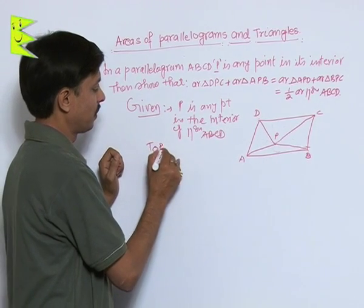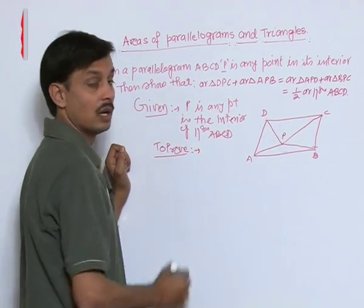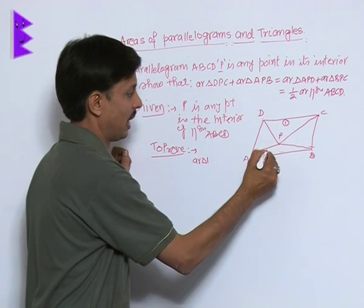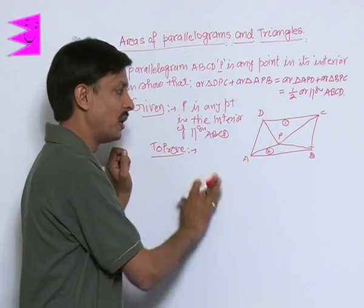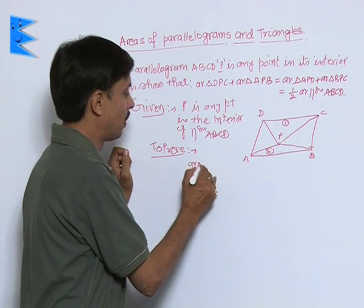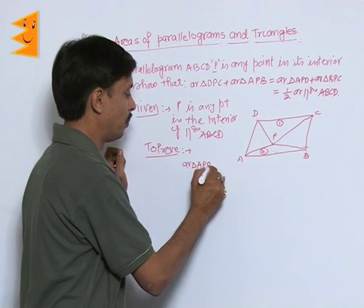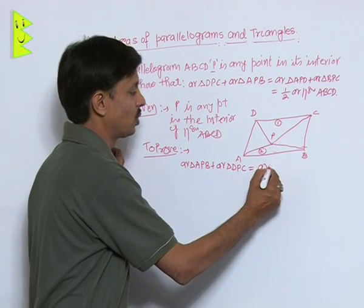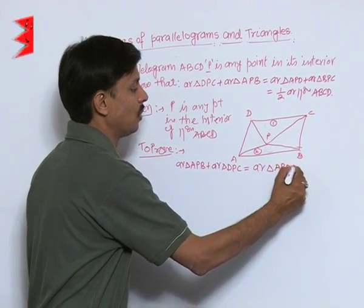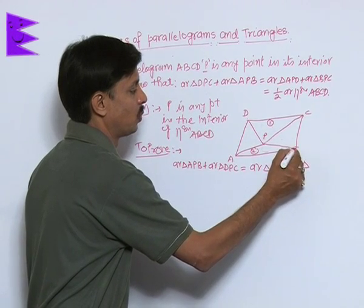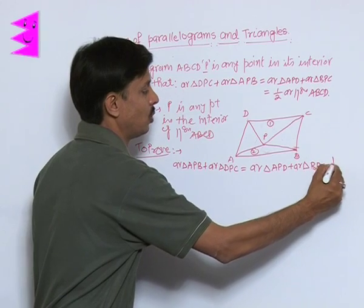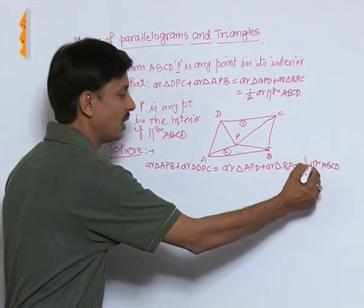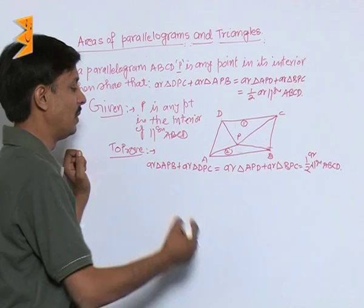What we want to prove: area of triangle APB plus area of triangle DPC equals area of triangle APD plus area of triangle BPC, and each sum equals half of the area of parallelogram ABCD.